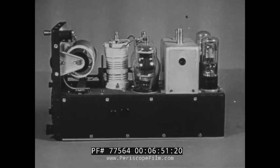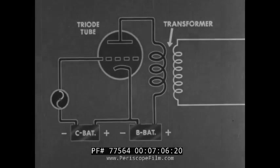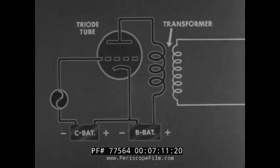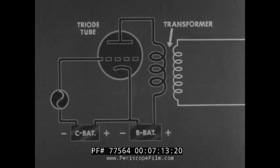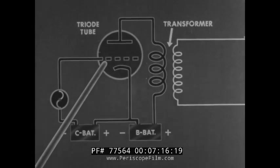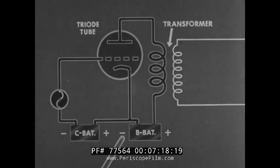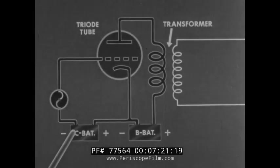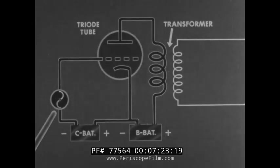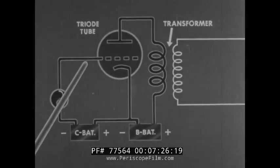Most military sets use some form of the triode tube. By hooking a transformer to a triode tube circuit, energy may be transferred to another circuit. The tube is connected to a B battery, a C battery, and an alternator. The alternator varies the voltage to the grid.